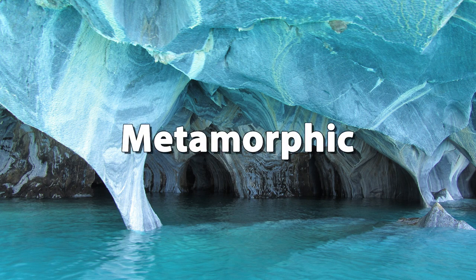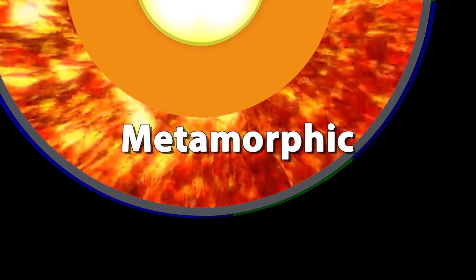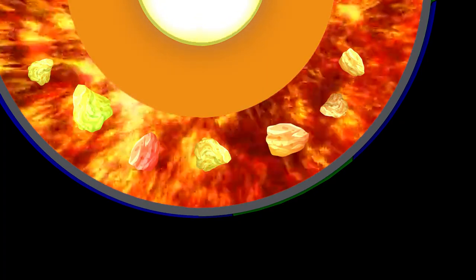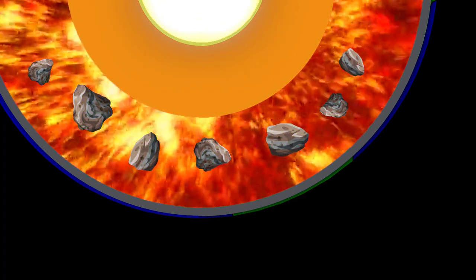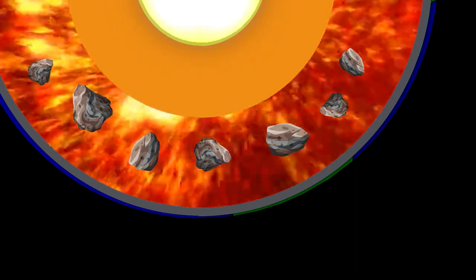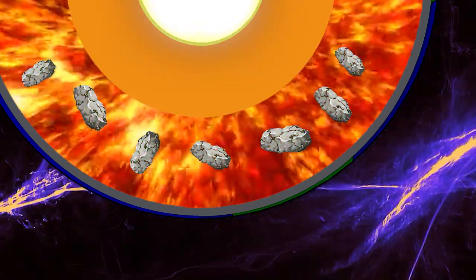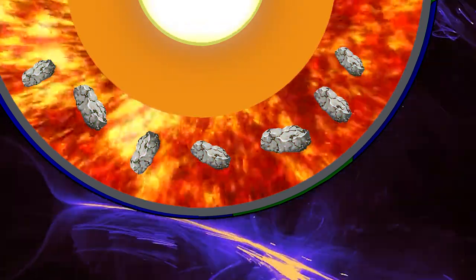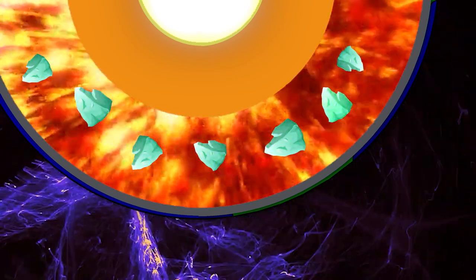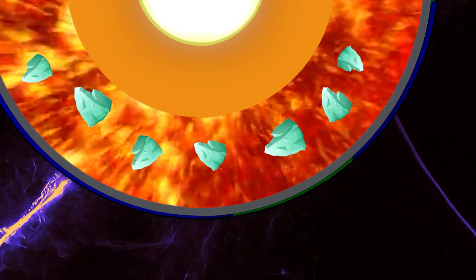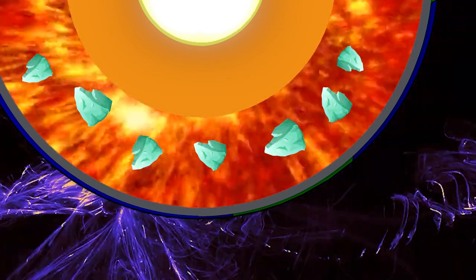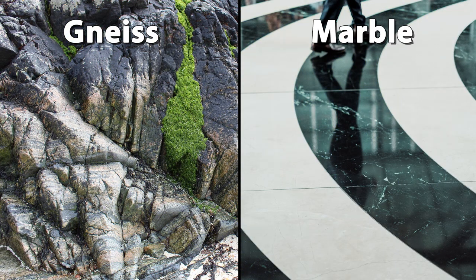Next, we have metamorphic rocks. Metamorphic rocks are made deep in the Earth and are formed by changes due to heat and pressure over a long period of time. Gneiss and marble are examples of metamorphic rocks.